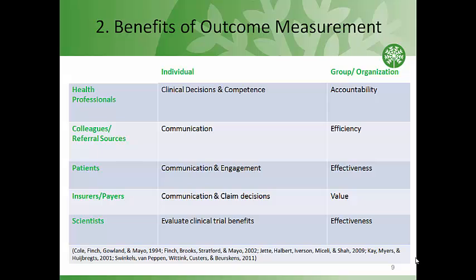Some of the individual and organizational benefits are listed here, organized by individual and group or organizational levels. For health professionals, benefits include supported clinical decisions and competence, improved communication with colleagues and referral sources, enhanced engagement with patients and insurers, and facilitated communication around claim decisions. For scientists, it helps evaluate clinical trial benefits. At the group or organizational level, accountability, efficiency, effectiveness, and value are facilitated, as is communicating with scientists.